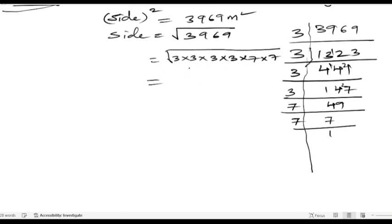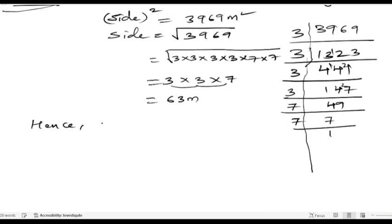The numbers which are in pairs become single. So we take 3 into 3 into 7, and multiplying: 3 threes are 9, 9 sevens are 63. So the side of the square is 63 meters. Hence, the side of the square field is 63 meters.